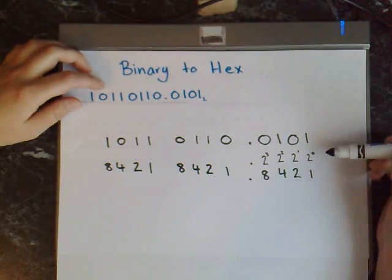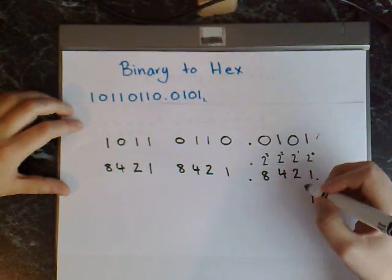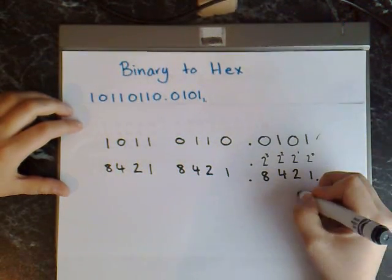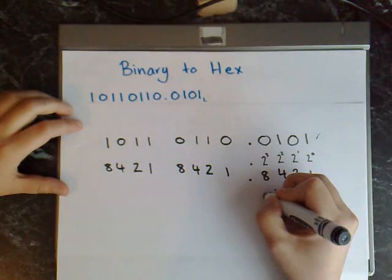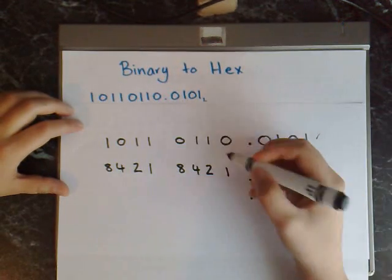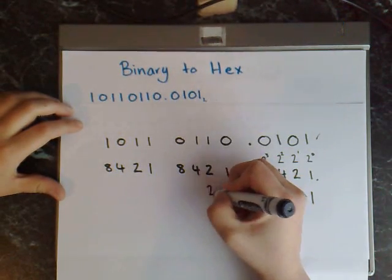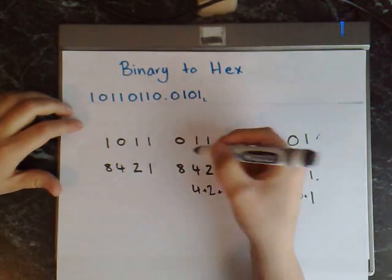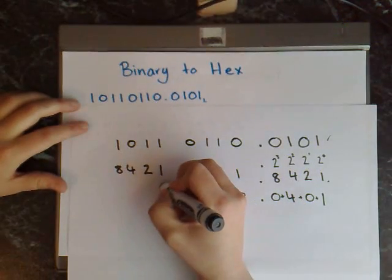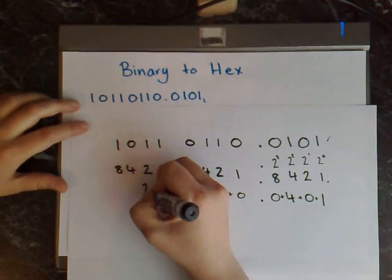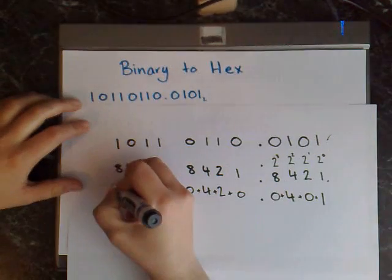Now you just multiply the top digits by the bottom digits. So 1 times 1 gives you 1, plus 0 times 2 gives you 0, plus 1 times 4 gives you 4, plus 0 times 8 gives you 0. Keep the decimal point, and 0 times 1 gives you 0, plus 1 times 2 gives you 2, plus 1 times 4 gives you 4. For the next group: 1 times 1 gives you 1, plus 1 times 2 gives you 2, plus 0 times 4 gives you 0, and 1 times 8 gives you 8.